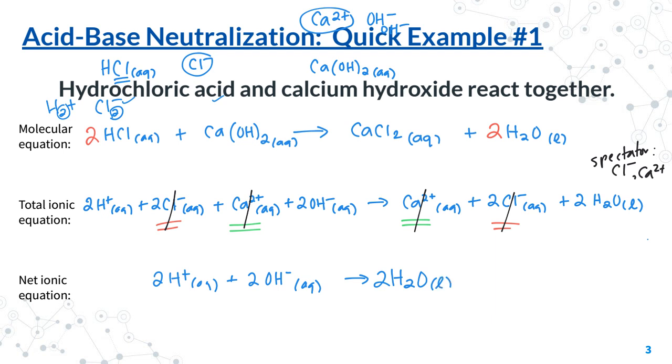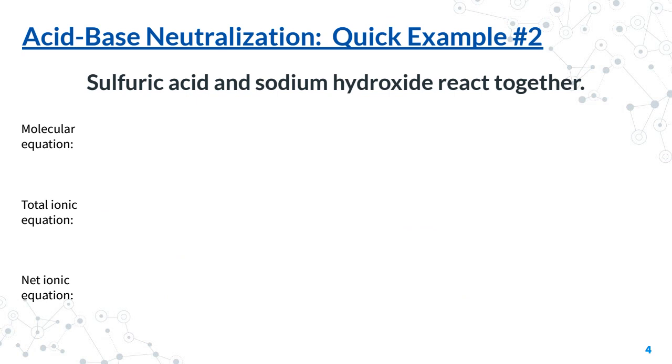Before we leave this net ionic equation, do make sure that your coefficients are reduced down to their lowest possible form. So I'm actually going to take my eraser here and I'm going to erase the twos because I know two, two, and two reduce down to one, one, and one. So actually the acid-base neutralization net ionic equation is always, at least for our purposes, going to be this equation right here, which makes predicting acid-base neutralization pretty easy.